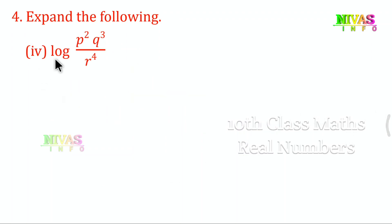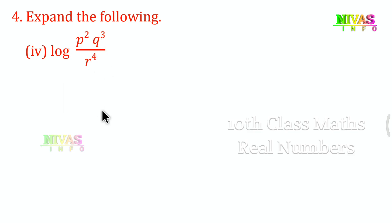Next, fourth problem: log(p² · q³ / r⁴). Here the numerator involves multiplication and the denominator involves division. Multiplication gives plus and division gives minus.